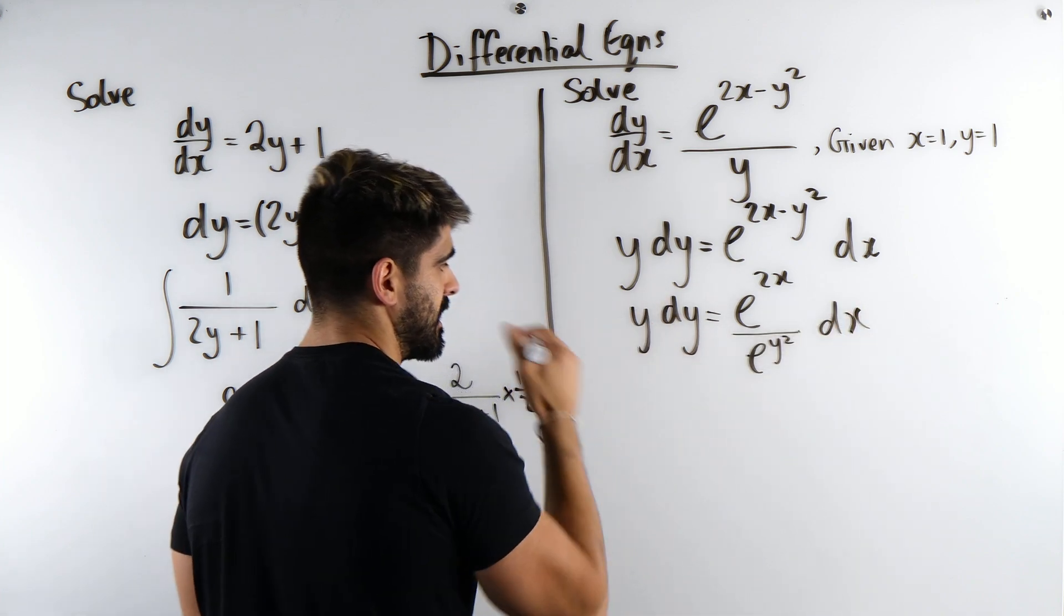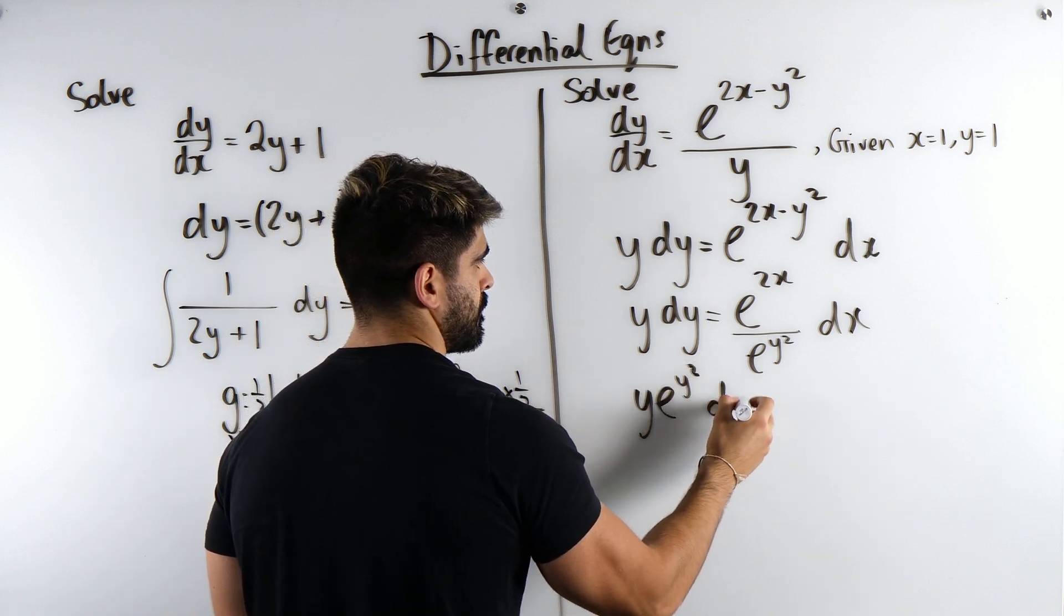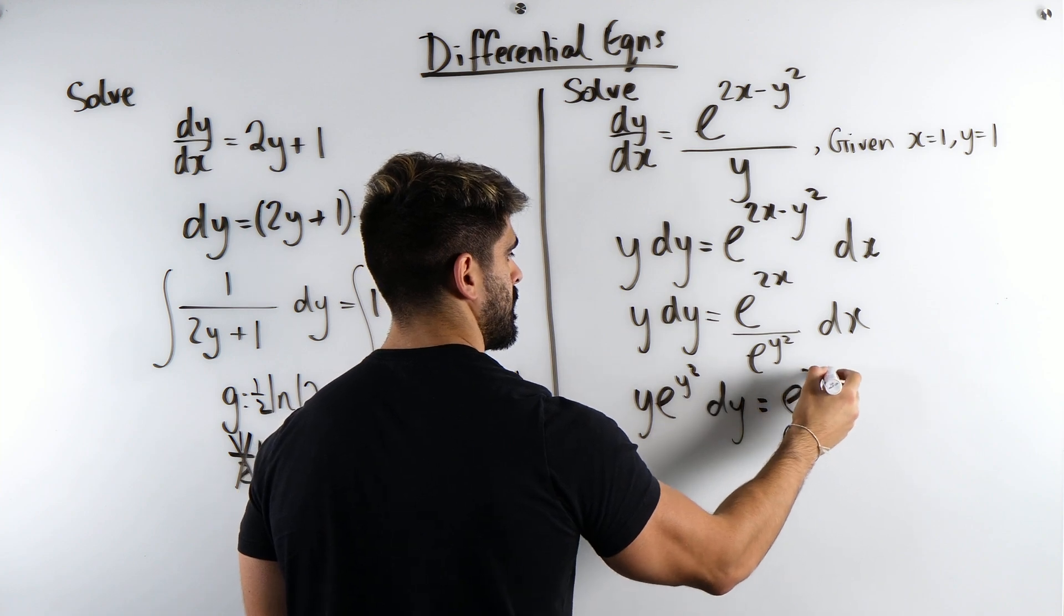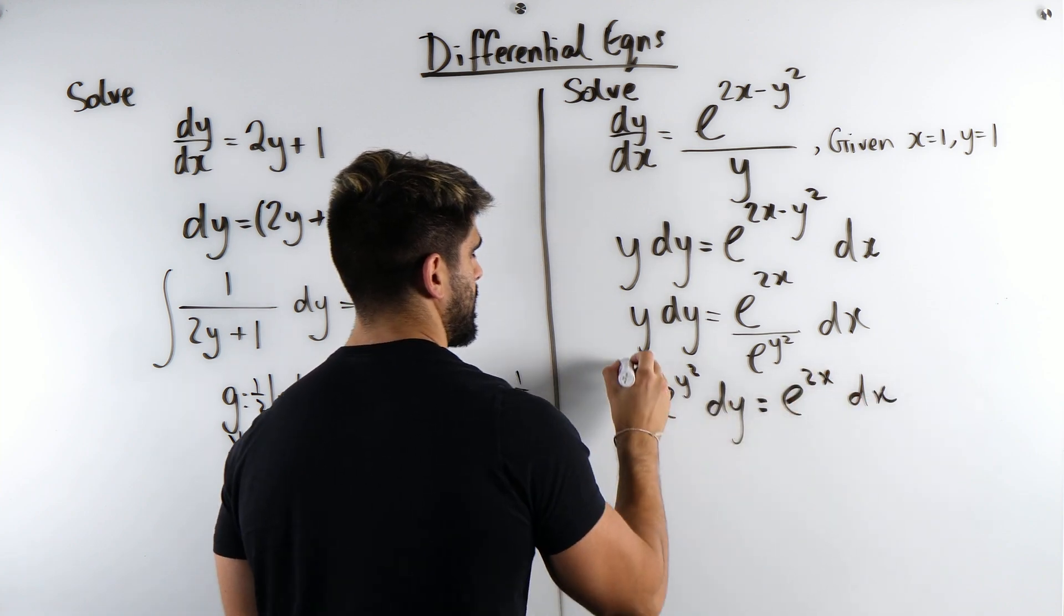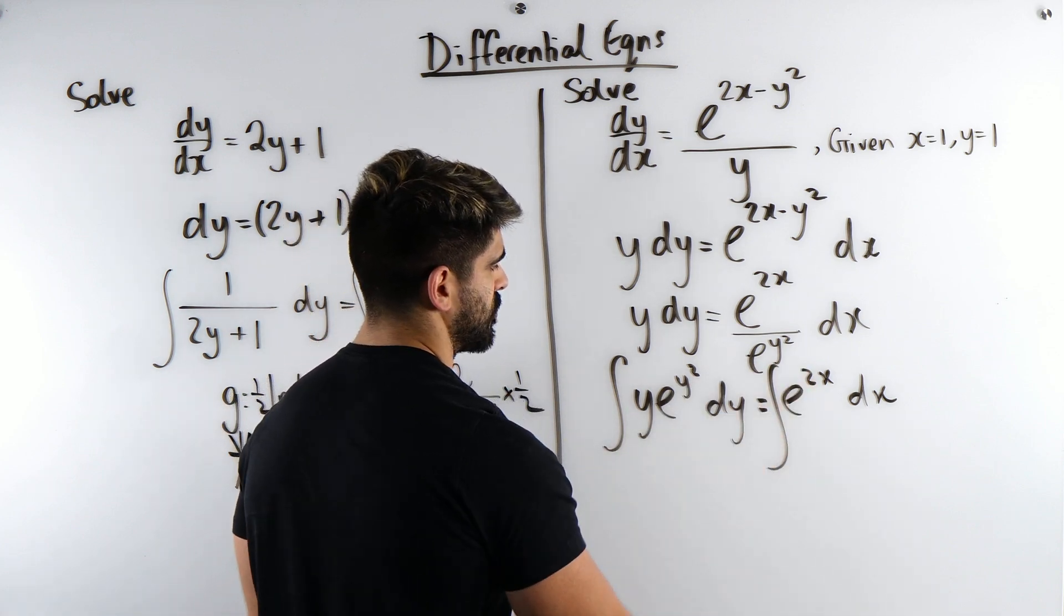And then we can multiply through by this. And then we've got all the y's on one side. And now we can integrate. Now, how do we integrate this?